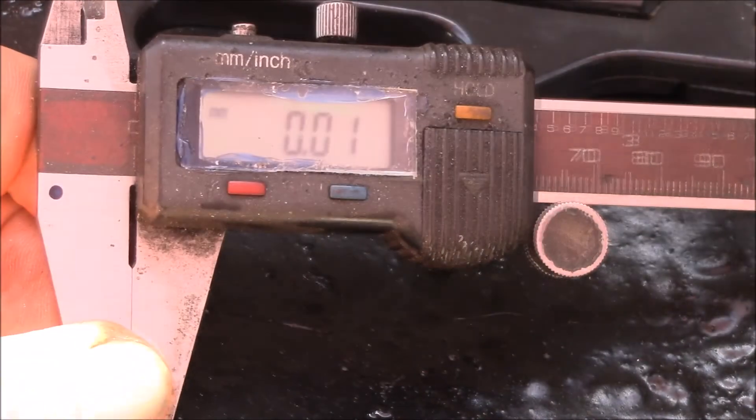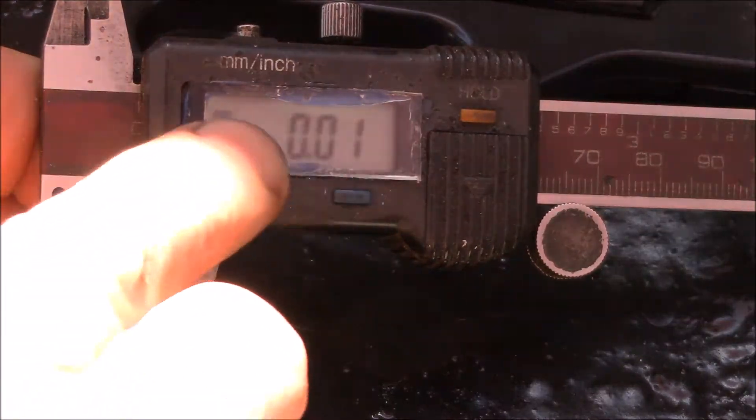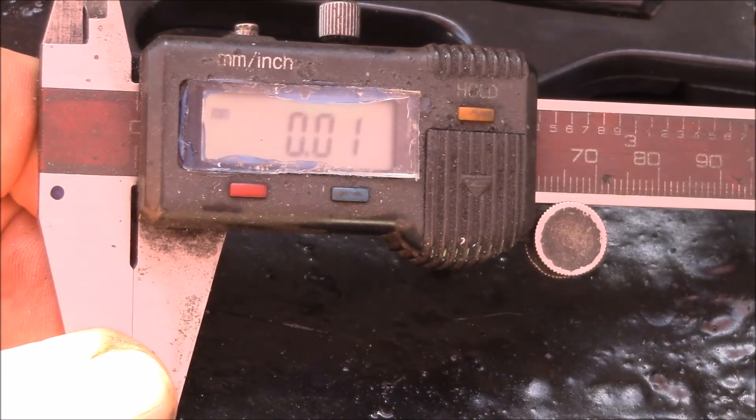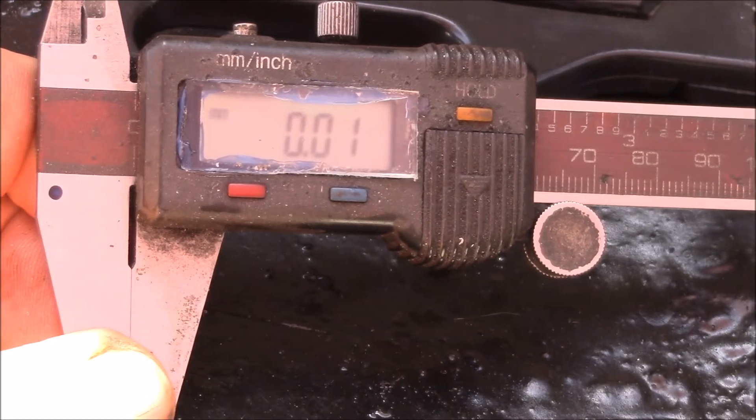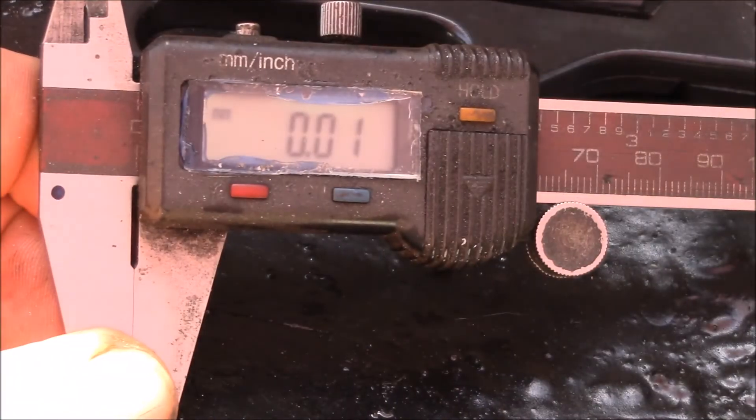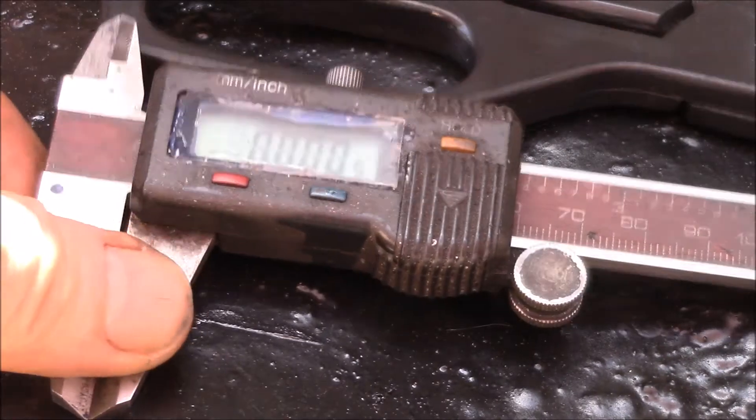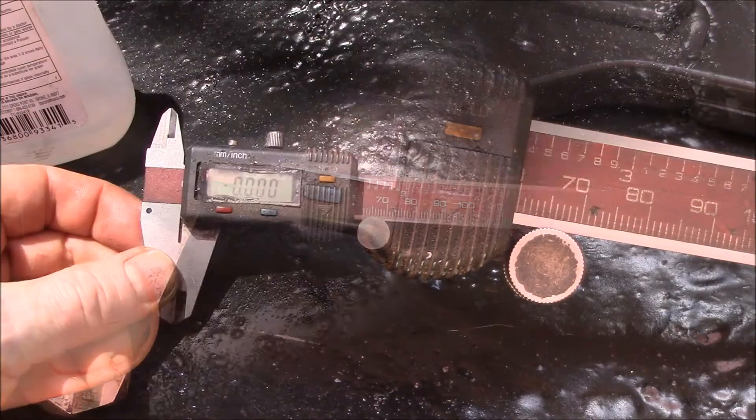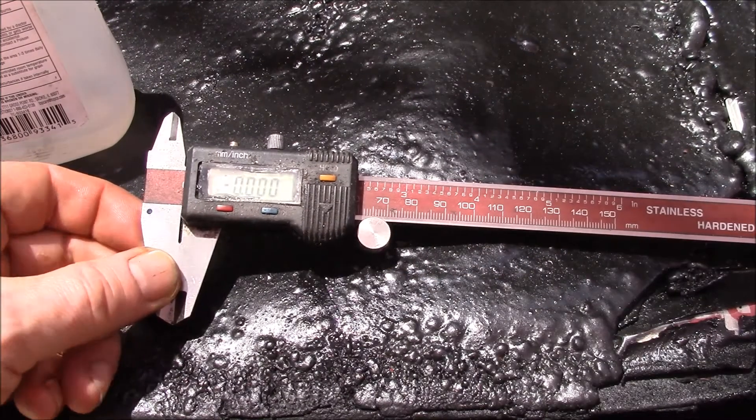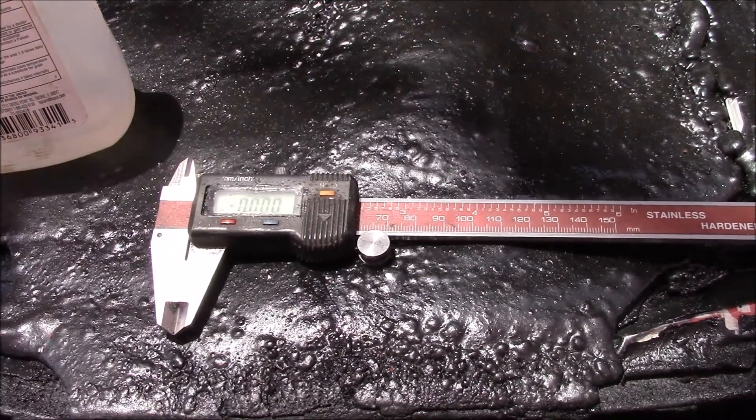Yeah, I figure in a year that thing's going to get all scratched up and too hard to read, so I just pry it out, cut another piece of plastic and put it in there. So that gives those digital calipers a new lease on life. I think that clear plastic works quite well for a new display bezel.